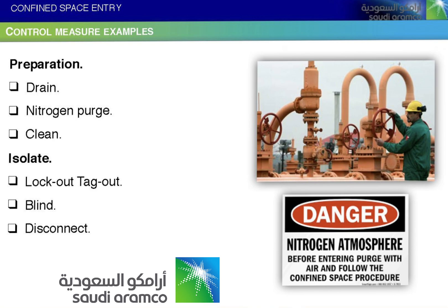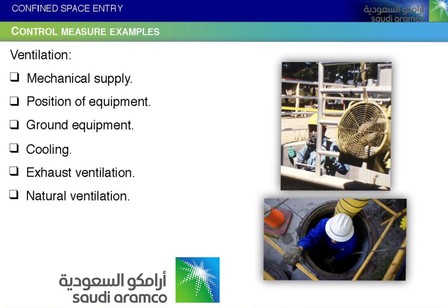Additional control measure examples for preparation: drain, nitrogen purge, clean, isolate, lockout, tagout, blind, and disconnect. Ventilation controls include: mechanical air supply; position of equipment; grounding of equipment; cooling; exhaust ventilation; and natural ventilation.